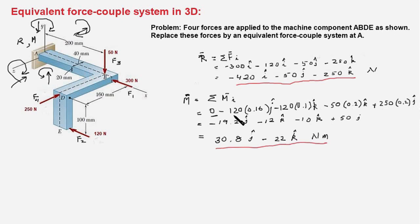So, we simplify this expression here and it works out to 30.8 J minus 22 K Newton meter. So, this is the moment and this is the force of the force couple system.